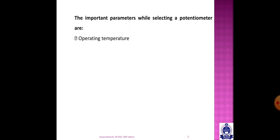Now we discuss the important parameters of transducers from the first module. The important parameters include temperature effects — materials expand and contract with temperature changes — as well as displacement and vibrations.